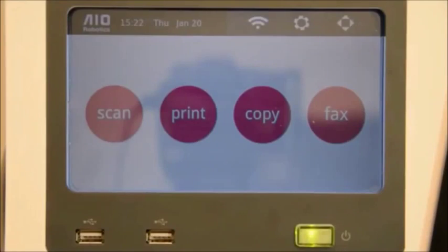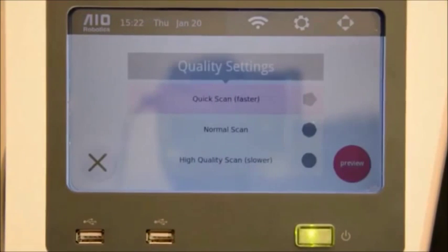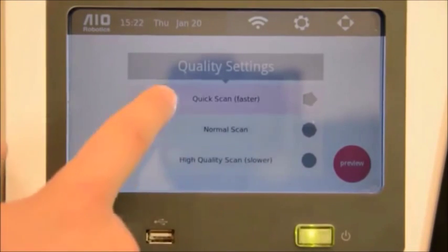This is the SUSE screen. I press the copy button. Now we have three options. The quick scan scans four sides of the object. The normal scan and high quality scan captures more details of the object, however it takes a little bit longer. Once you did your selection, you press the preview button.